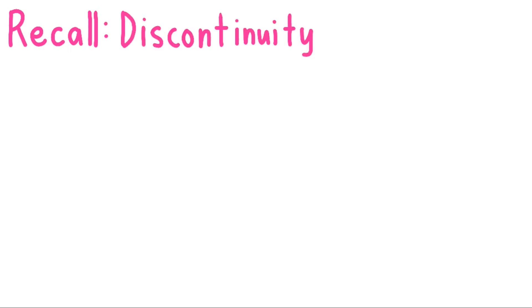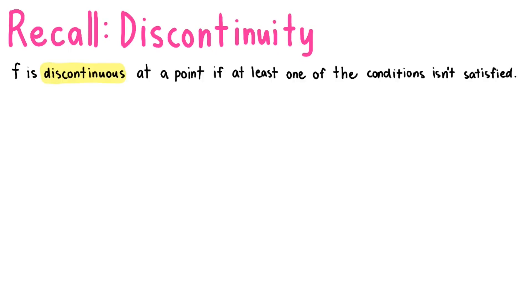Hello there. Recall that in the previous video, we learned about continuity at a point. Along with this, we also talked about discontinuity at a point. We say that f is discontinuous at a point if at least one of the conditions in continuity isn't satisfied.